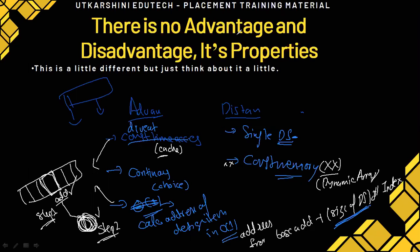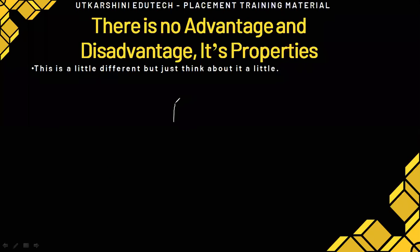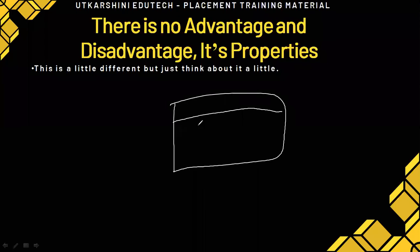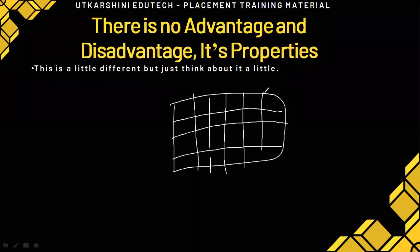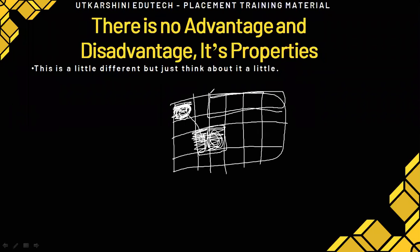One thing I want to share before we start linked lists: the same problem that led us to dynamic arrays also leads us to linked lists. When we fill up a space, the next time we need more space, we take twice the size, copy the data over, and fill in that new space. Once that space is also consumed, we ask for a memory allocation of twice the size again, copy the items first, and then start filling more.